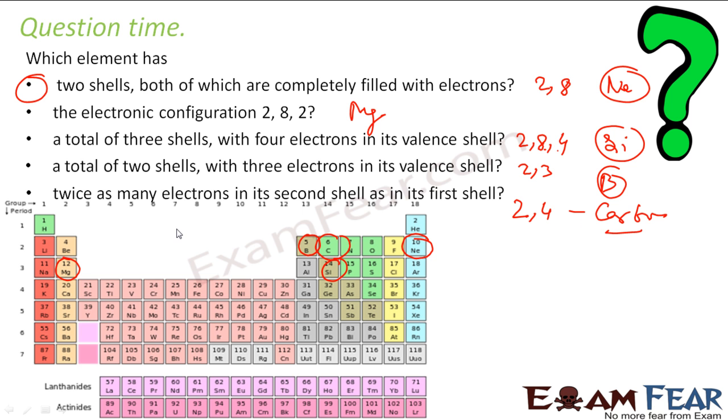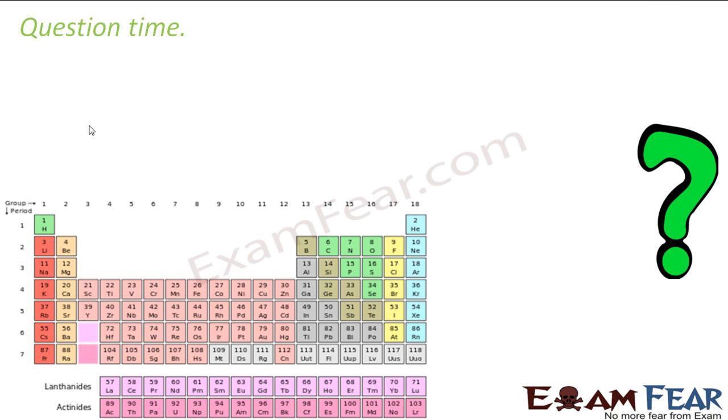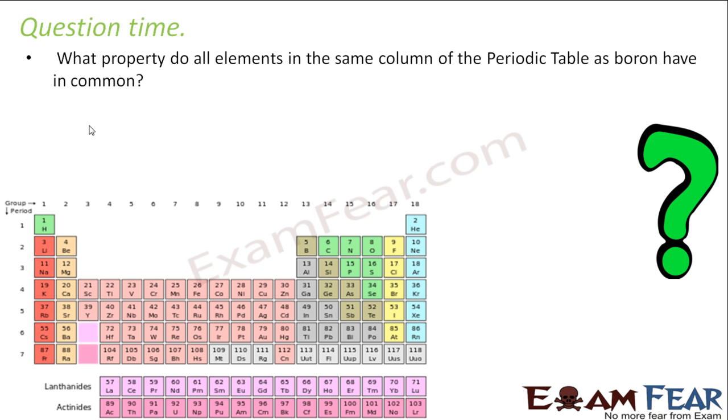So you can see it's very easy to find the elements if I know some property of the element and I have the periodic table. What properties do all the elements in the same column of the periodic table as boron have in common? So I have boron. I am asked about all these which have same column. If you see, for all these my valence is three. In fact, valence electron is also three.